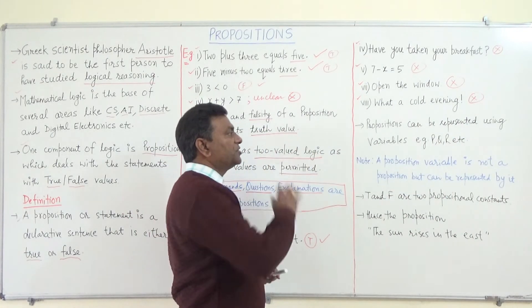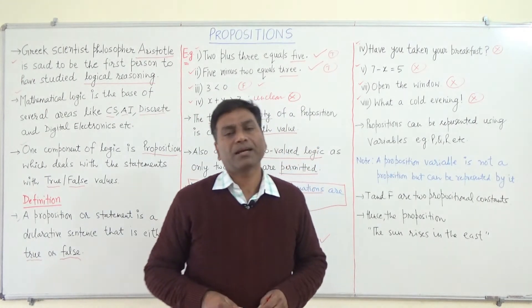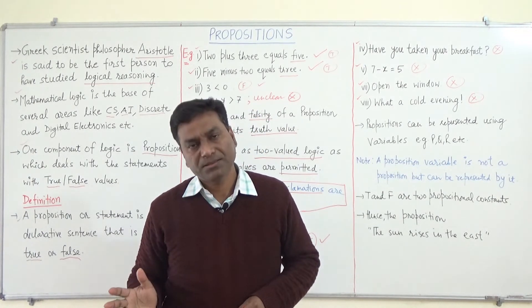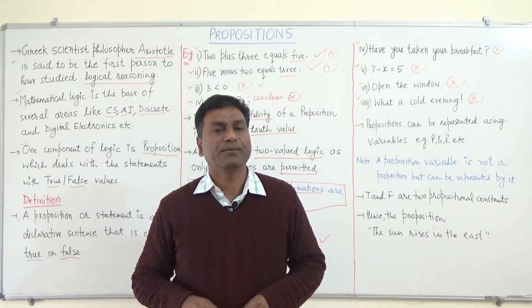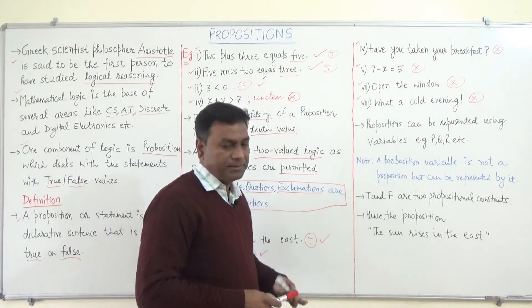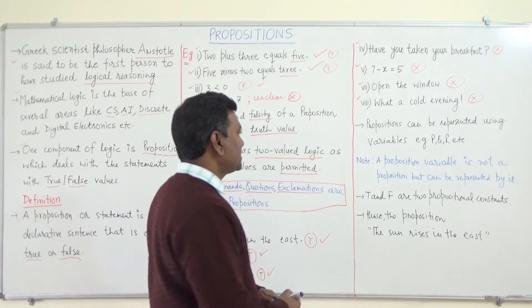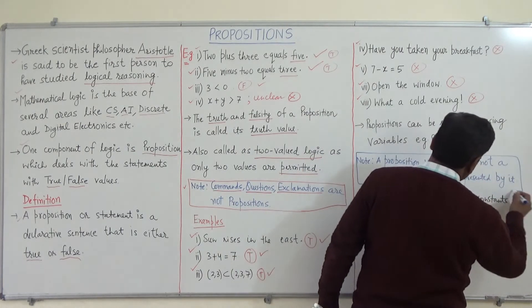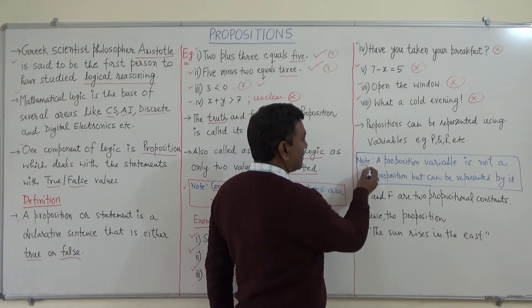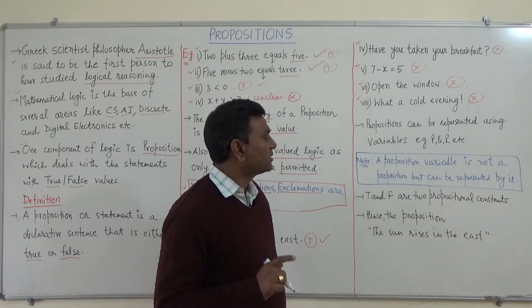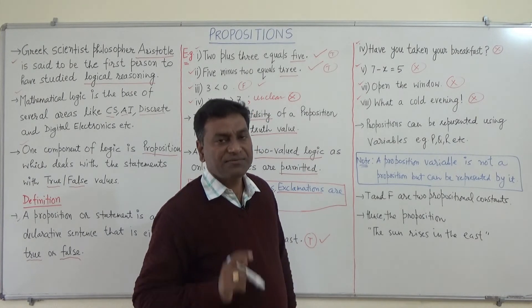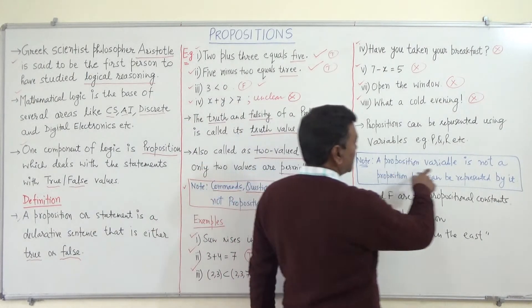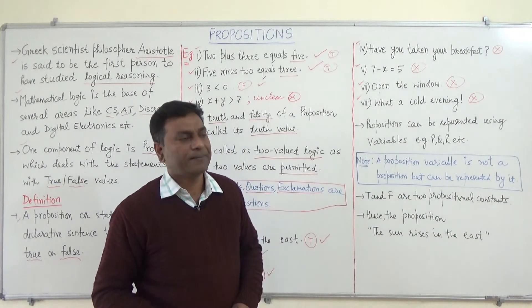Furthermore, propositions can be represented using variables like p, q, and r. For example, 'Sun rises in the east' can be represented by the variable p. However, it is important to note that a proposition variable is not itself a proposition — it simply represents one. So a proposition variable is not a proposition, but a proposition can be represented by it.